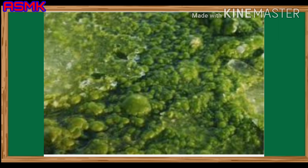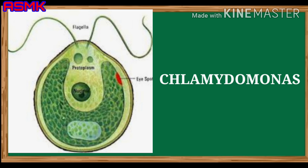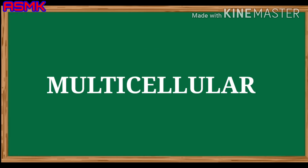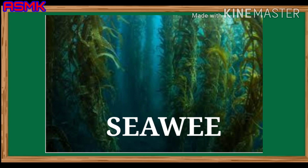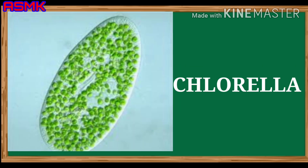Algae. They are a group of simple plant-like organisms that contain chlorophyll. They may be unicellular — example: chlamydomonas — or multicellular — example: seaweeds. Some unicellular algae also exist in colonies — example: chlorella and diatoms.